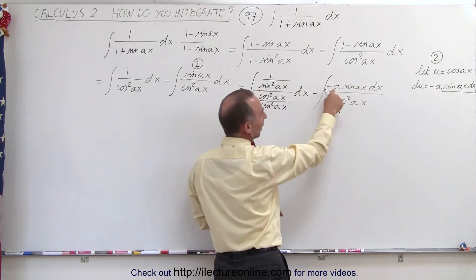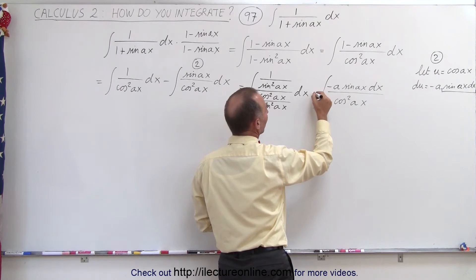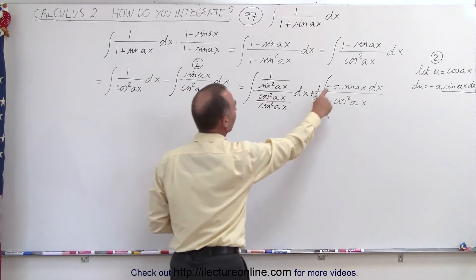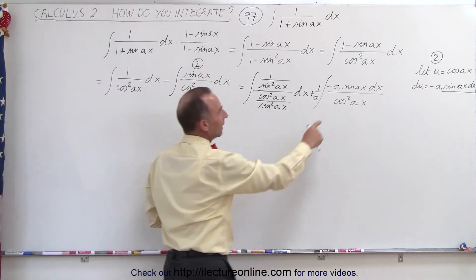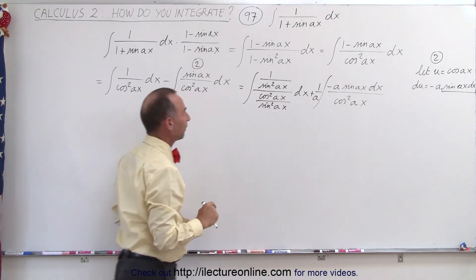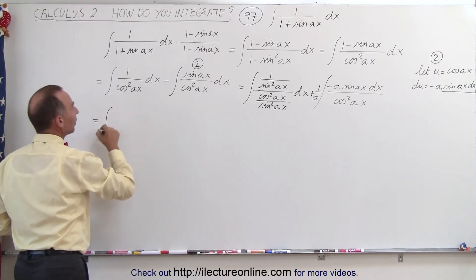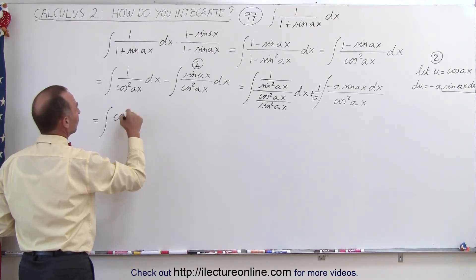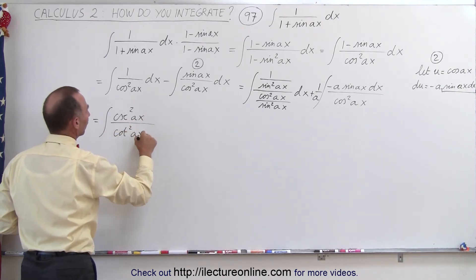Since we multiplied the numerator by negative a, we have to divide by negative a as well, so this becomes plus 1 over a — the negative from the du and the negative a cancel. We can now rewrite the first integral as the integral of cosecant squared of Ax divided by cotangent squared of Ax dx.